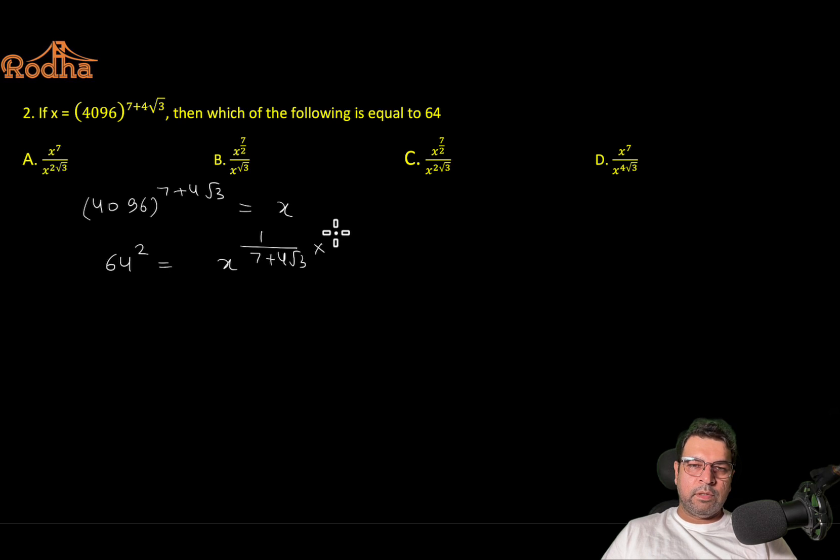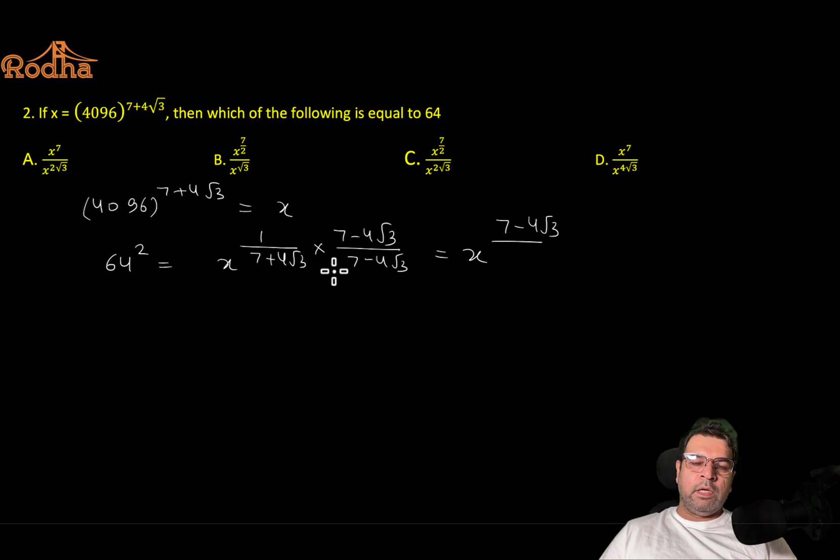We can rationalize this by 7 minus 4 root 3 multiplication, which is nothing but x to the power 7 minus 4 root 3. And the denominator will be 7 square, 49 minus 4 root 3 square is 48, which is nothing but 1. That is the value of 64 square. The value of 64 will be half of this, so the 2 will go in the denominator. So it will be 7 minus 4 root 3 divided by 2.